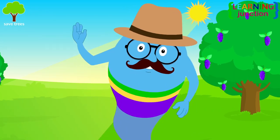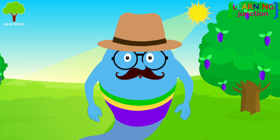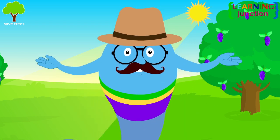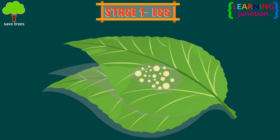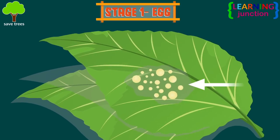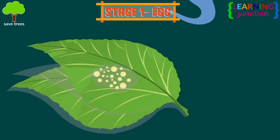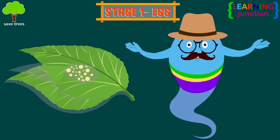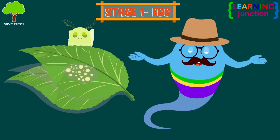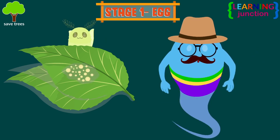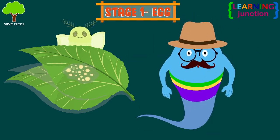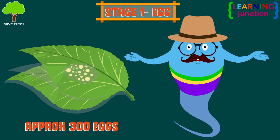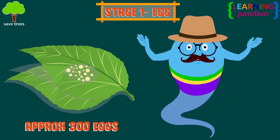Let's see the different stages of the life cycle one by one. Stage 1: Egg. It is the first stage of the life cycle of the silkworm. The egg is laid by a female moth, which is mostly the size of tiny dots. A female moth lays more than 300 eggs at a time.